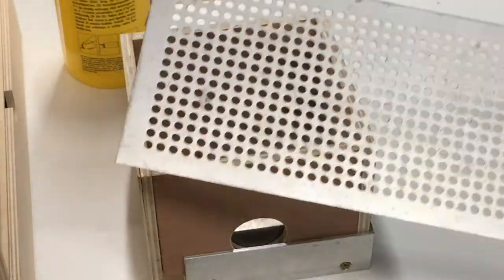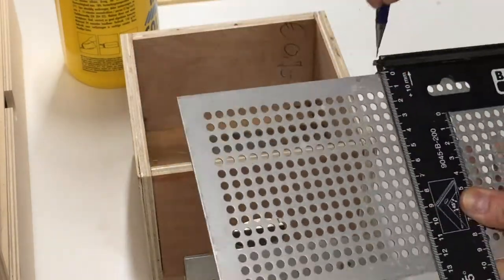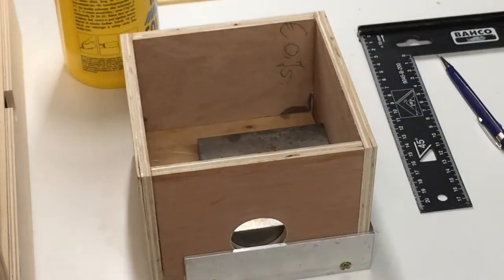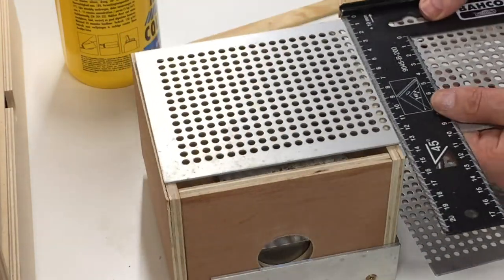For the top of the box I used this perforated aluminum sheet, which had been sitting on my workbench for years. I don't know where or what it came from, but it is perfect for a vacuum box.